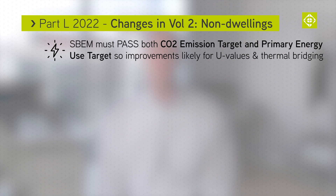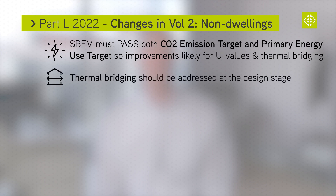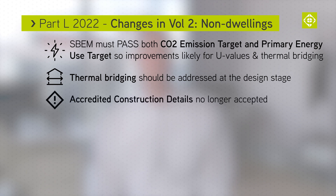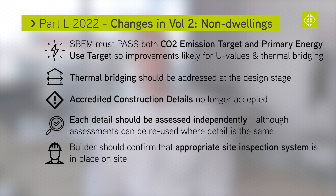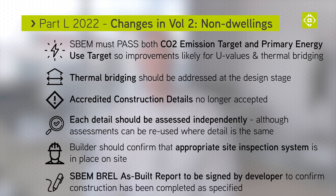Volume 2 of the new Part L relates to buildings other than dwellings. Key changes include that the SBEM is now required to pass both the CO2 emission target and a new primary energy use target, so improvements are likely to be required for both U-values and thermal bridging. Thermal bridging should be addressed at the design stage, and accredited construction details will no longer be acceptable for use within the SBEM calculation — instead each detail should be independently assessed, though assessments can be reused where the detail is the same. Builders should confirm an appropriate system of site inspection is in place, and the SBEM as-built report should be signed by the developer to confirm construction has been completed according to specification.